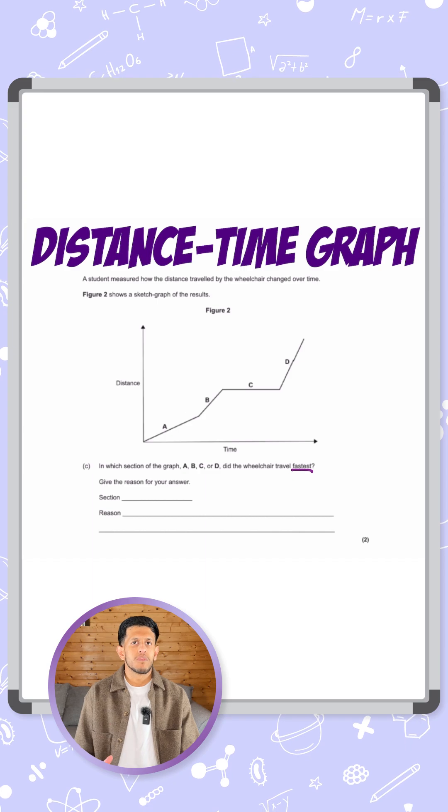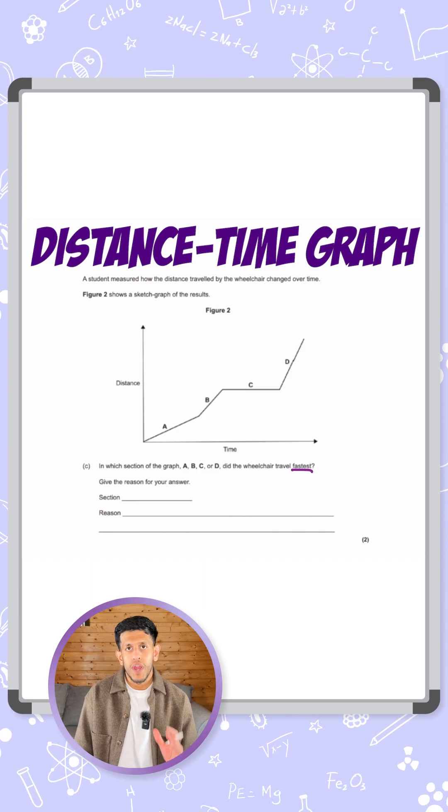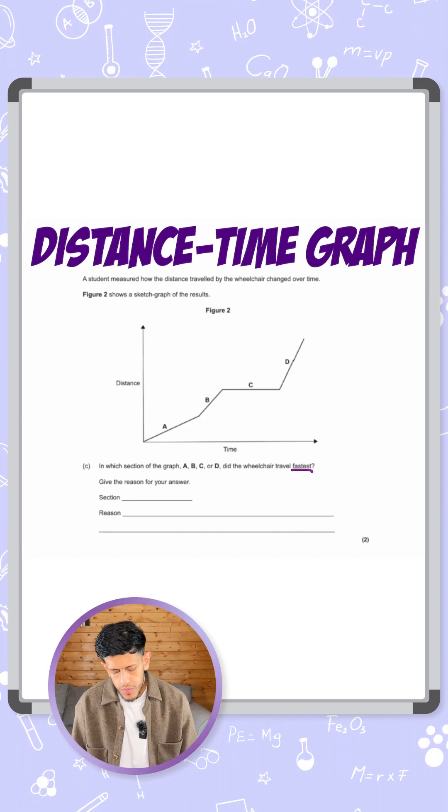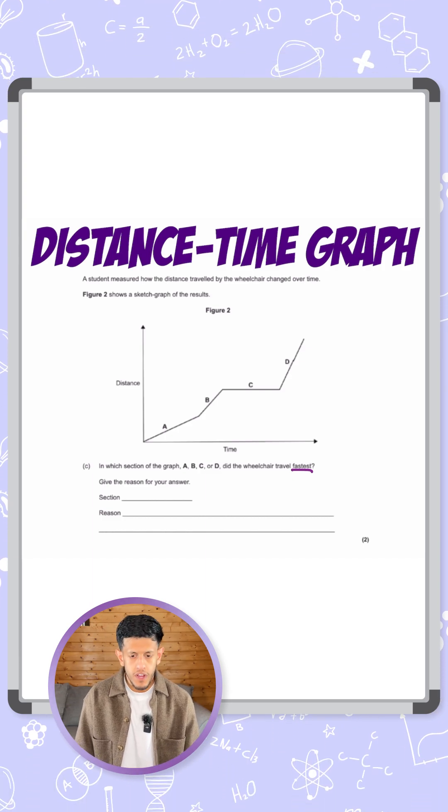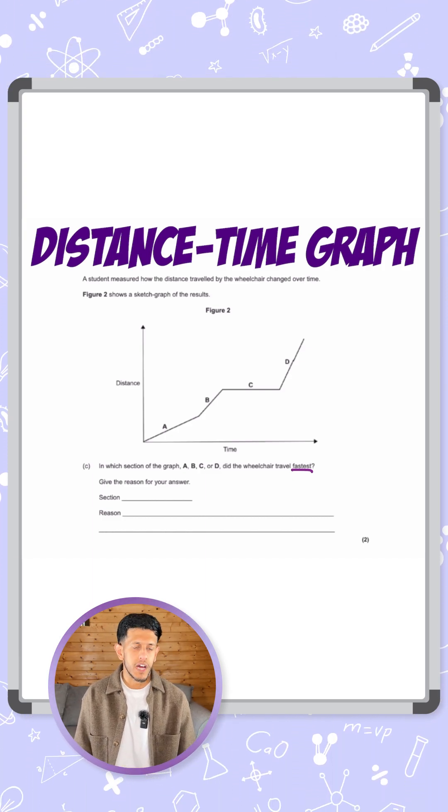Now for a distance time graph the speed is given by the gradient of the graph. So the higher the gradient or the steeper the line, the faster the speed of the car because it's travelling more distance over a shorter period of time.